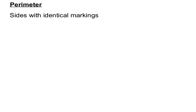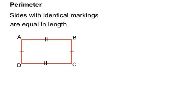Sides with identical markings on them — geometrical markings — are equal in length. On this diagram here we have single markings on two sides and double markings on the top and the base.